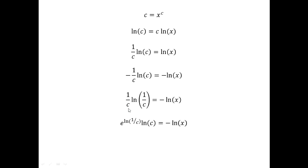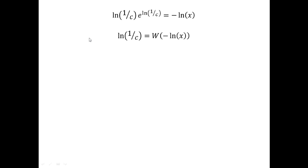Now I use a trick: I rewrite 1/C as e to the ln(1/C), since those operations cancel. The left-hand side is unchanged. So I have ln(1/C) · e^(ln(1/C)) = −ln(X). This form is exactly what's needed to incorporate the Lambert W function — when I have some argument times e to that same argument equal to something else.